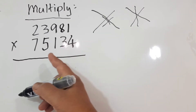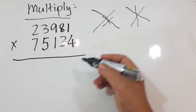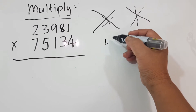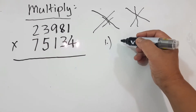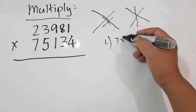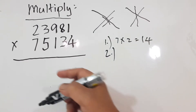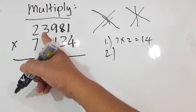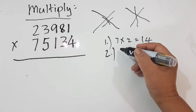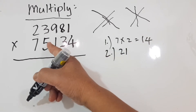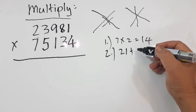Now we'll start. We have 23,981 multiplied by 75,134. First, I take the multiplication. Step 1: 7 times 2 is equal to 14. Step 2: 7 times 3, so we have 7 times 3 is equal to 21, plus 5 times 2, plus 10.